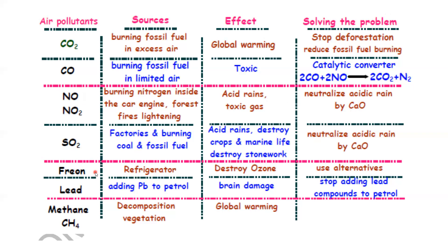Freon gas is used as a coolant in refrigerators and air conditioners. It is made of chlorofluorocarbons, also known as CFCs or Freon. The effect of Freon is that it can destroy the ozone layer. The ozone layer in the upper atmosphere protects us from harmful ultraviolet radiation. If Freon is released, it destroys this ozone layer, so we should use alternatives.